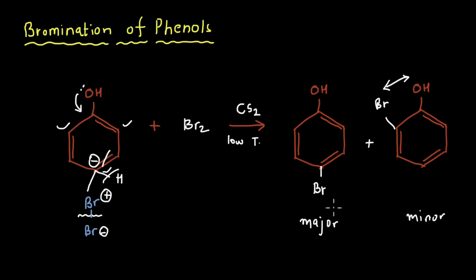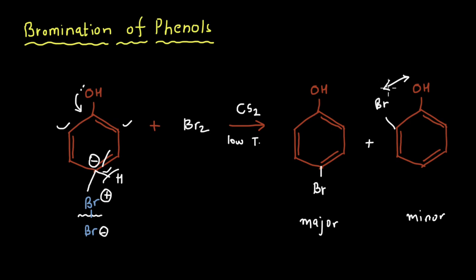The solvent had a very important role in the bromination reaction. In the first reaction, water being a polar solvent made it easy to break the Br-Br bond, so many bromines were available and we got 2,4,6-tribromophenol as the white precipitate. When we changed to a non-polar solvent and lower temperature, only one bromine got attached at the ortho or para positions. And because of the repulsion making ortho addition more difficult, the para product was the major product and the ortho product was the minor product.